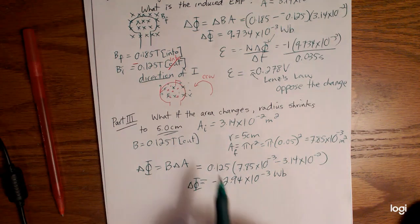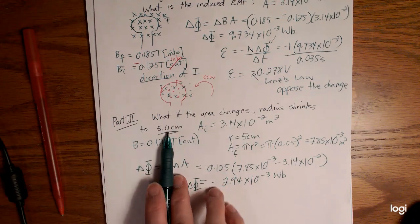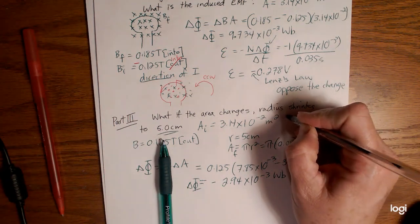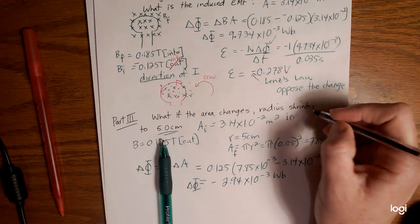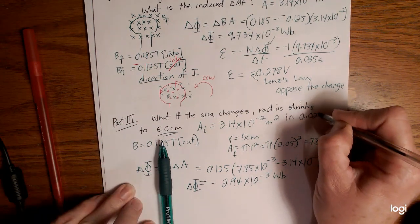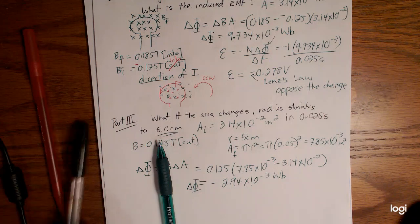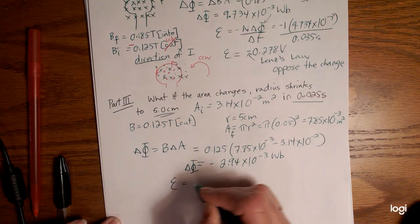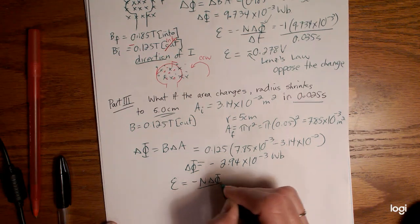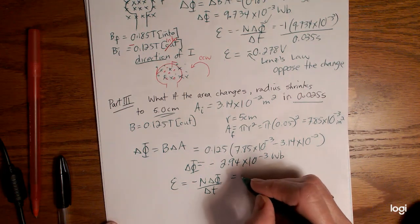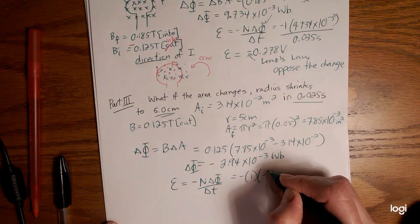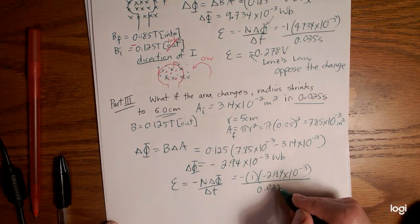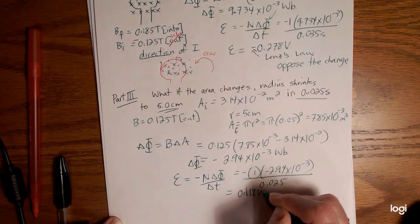Now that's the delta phi. I'm missing one part of my original question. It says what if the area changes, the radius shrinks to five centimeters? Well we need to know how quickly this is happening. Let's say it's happening in 0.025 seconds. That must have been when my pen died before. So if this is occurring in 0.025 seconds, that means that our EMF induced will be negative n delta phi over delta t. We're going to end up with again just one loop. Our delta phi negative 2.94 times 10 to the negative 3 divided by 0.025, and then we should get 0.118 volts is my EMF induced.